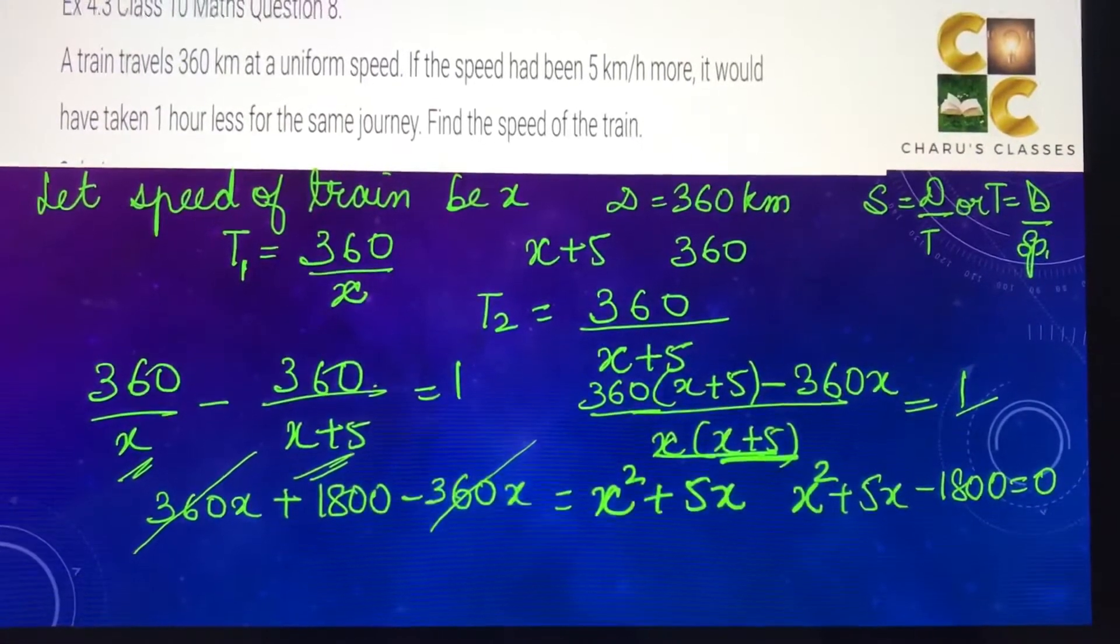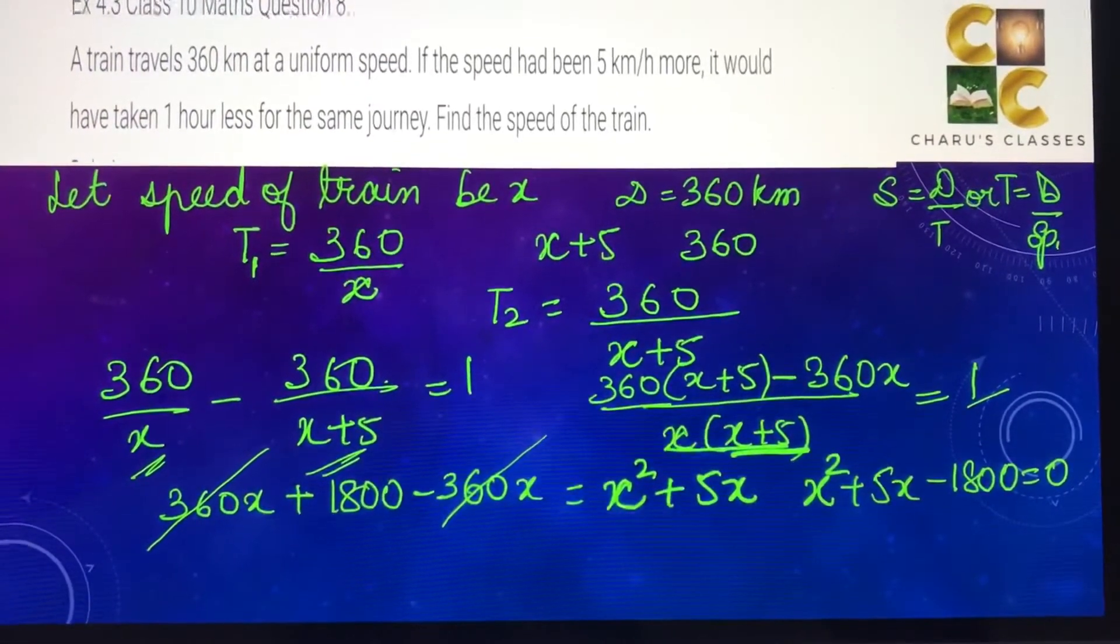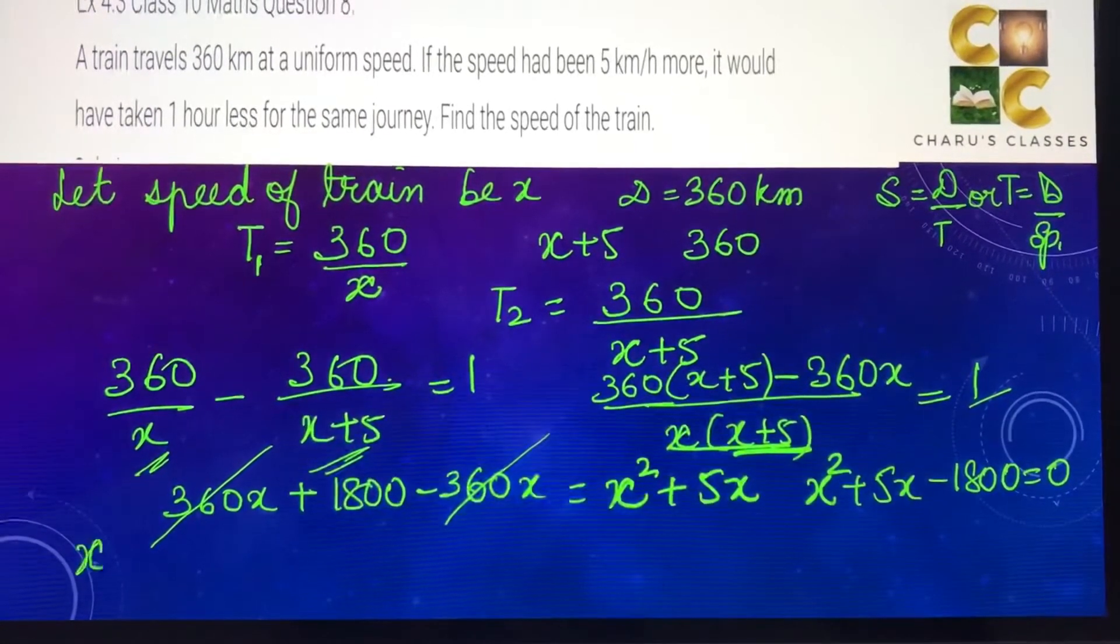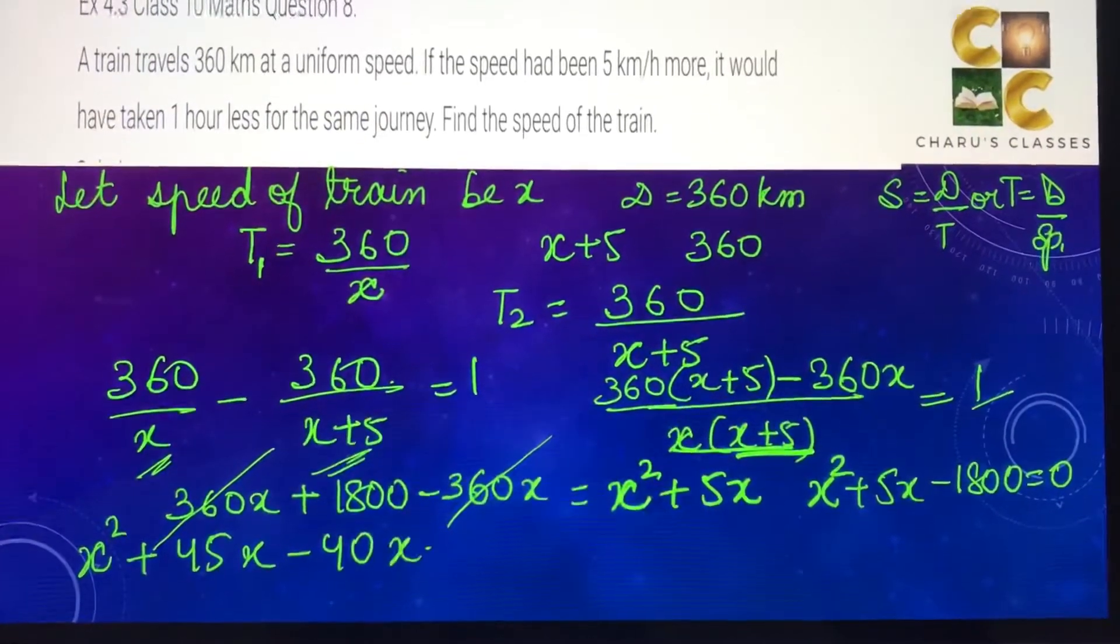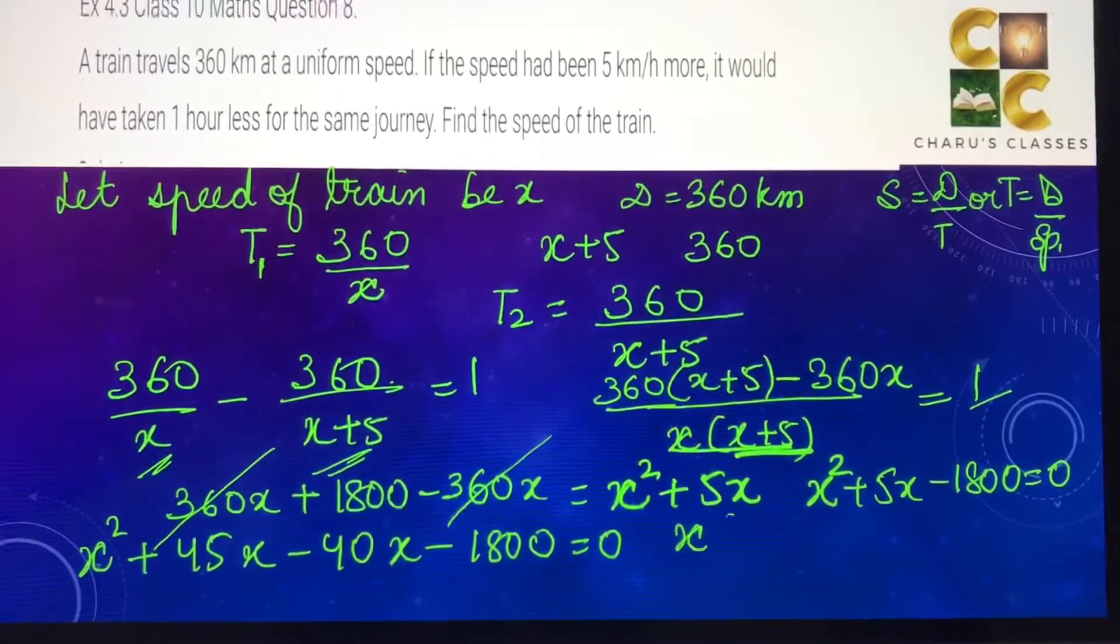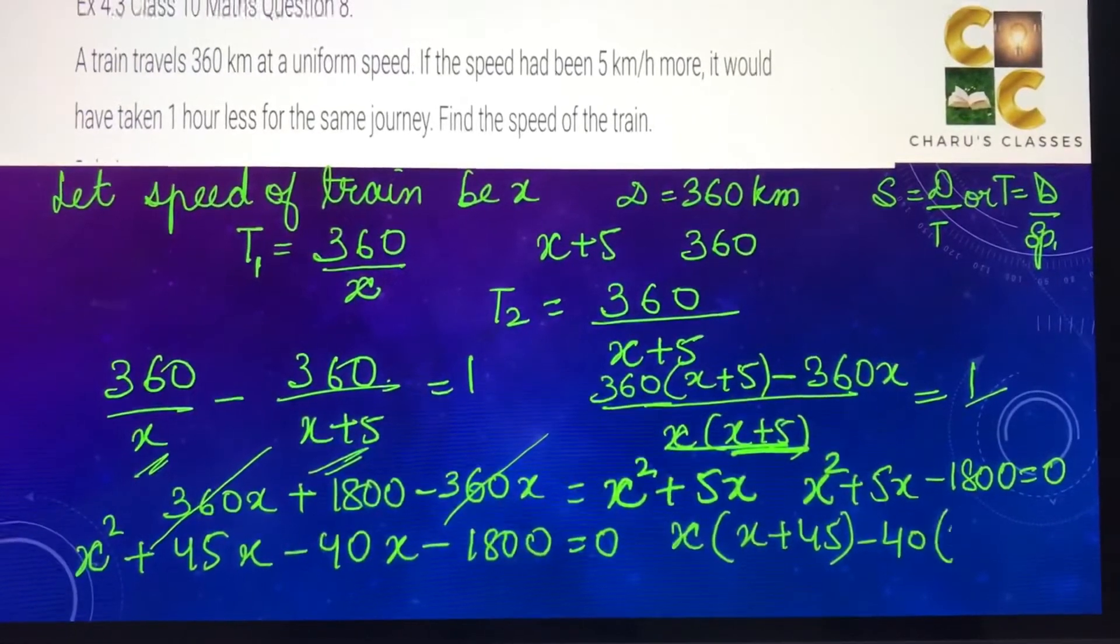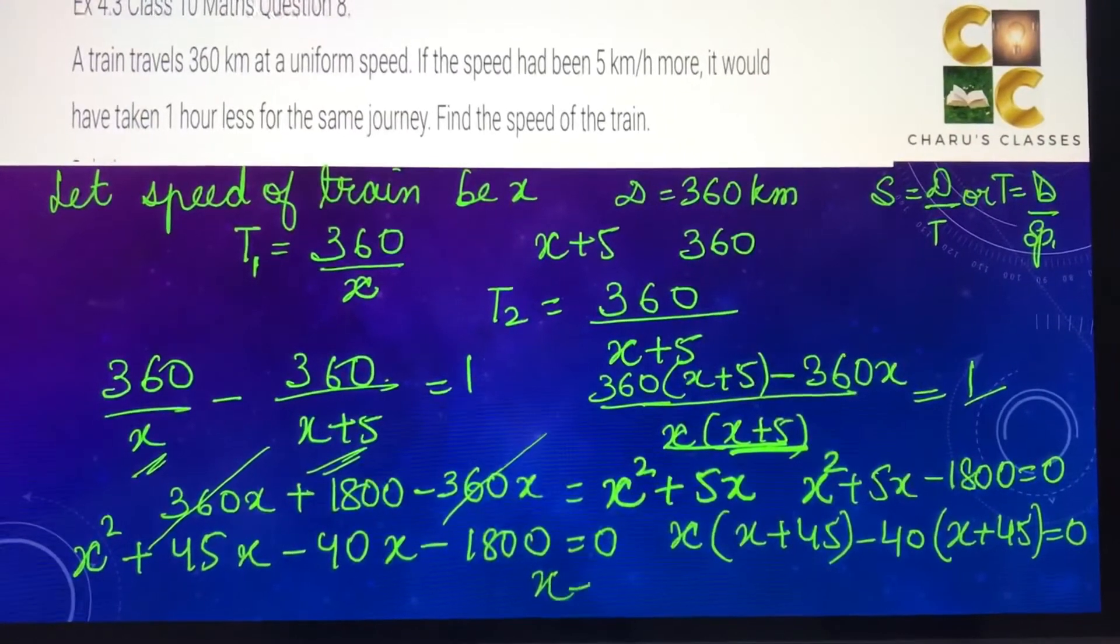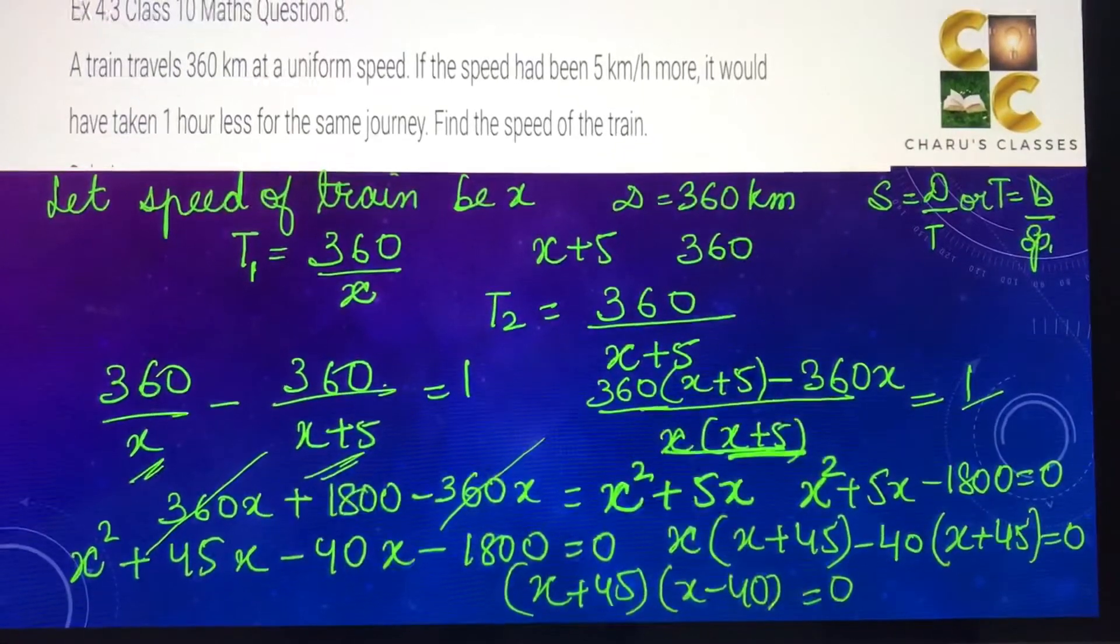We have to look for factors of 1800, which should give us 5x in the middle. So we can take it as 45x - 40x. So x² + 45x - 40x - 1800 = 0. Taking x common from the first two terms, x(x + 45), minus 40 from the next two terms, (x + 45) = 0. So (x + 45)(x - 40) = 0.